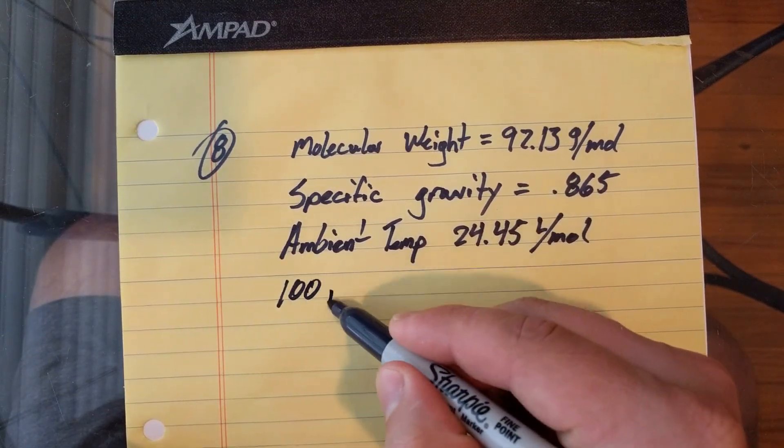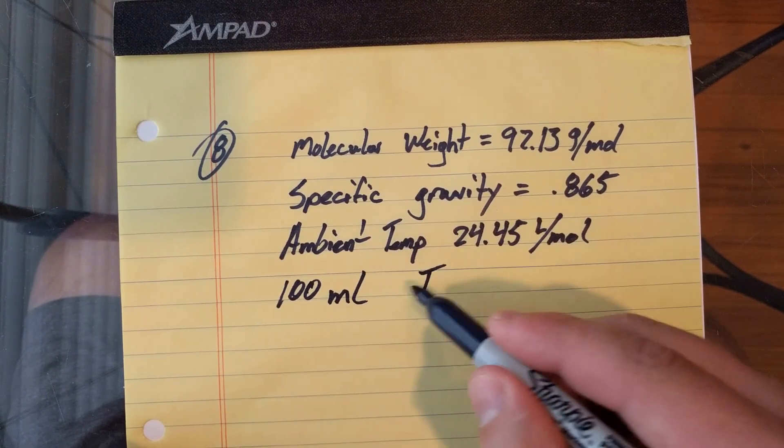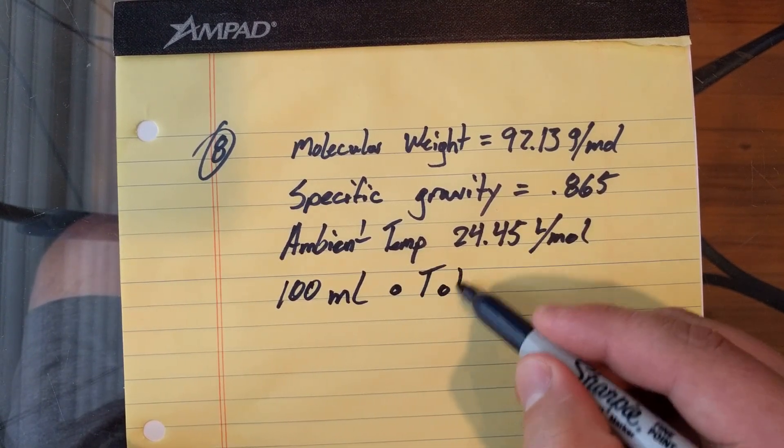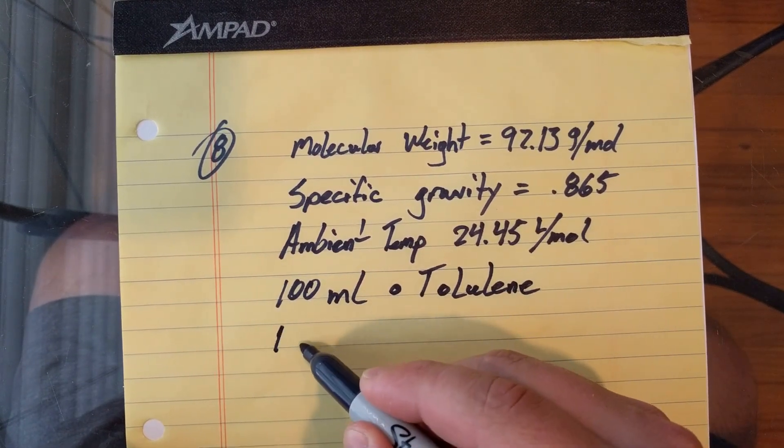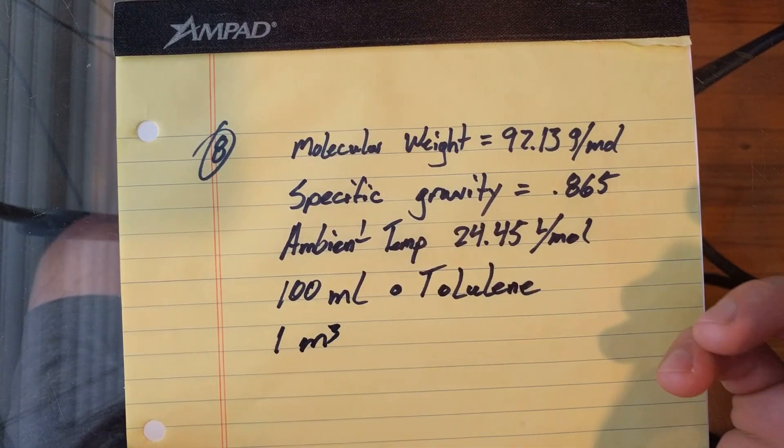We have 100 milliliters of toluene and one meter cubed.